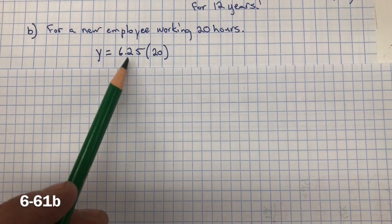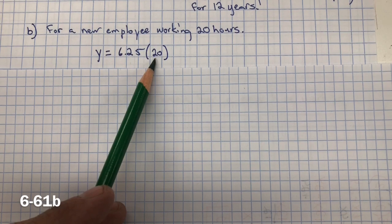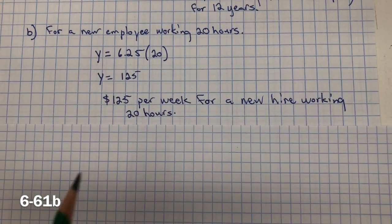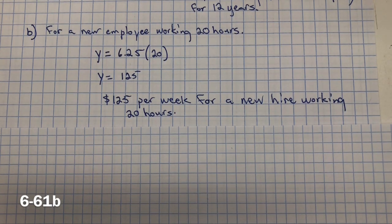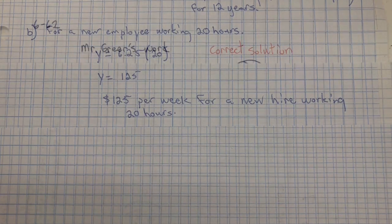So I have $6.25 multiplied by 20 hours, which would give me $125. So he would make $125 per week if he worked 20 hours.